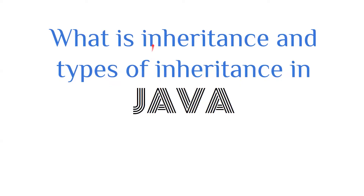In this video we are going to talk about inheritance, one of the most important topics of object-oriented programming. In Java, interview questions about inheritance and its types are very common. We will not talk about a specific programming language first — just inheritance in general. Inheritance is basically taking something from a parent, like acquiring characteristics. For example, if two people have curly hair, there are high chances their child will also have curly hair — that is inheritance.